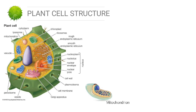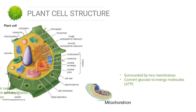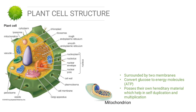The next organelle is the mitochondrion, which is surrounded by two membranes. The main function of the mitochondrion is to convert glucose to energy molecules, or ATP. The mitochondrion possesses its own hereditary material, which helps in its duplication and multiplication.